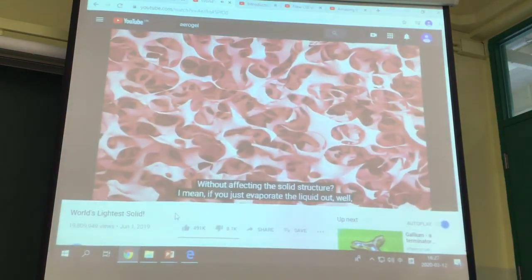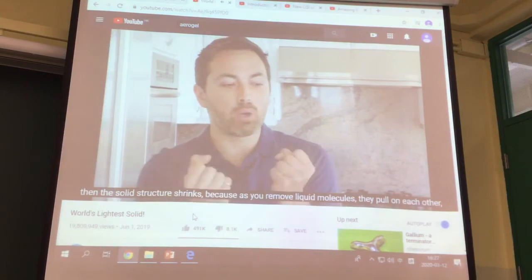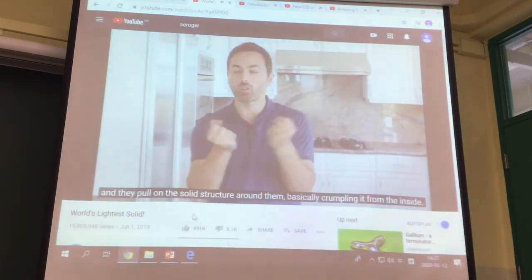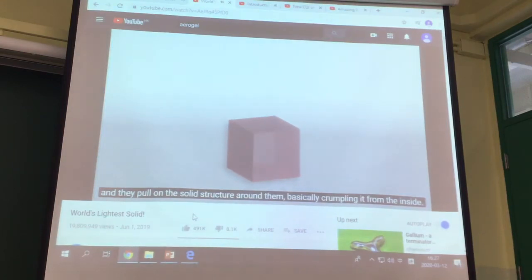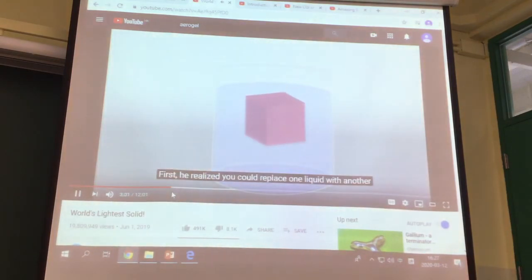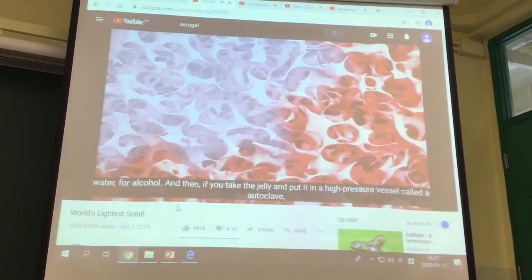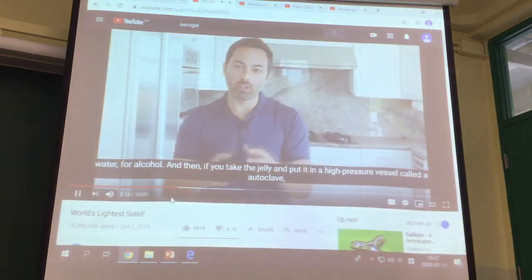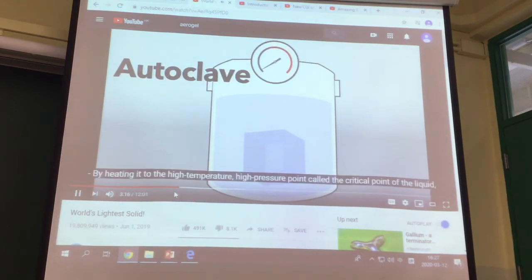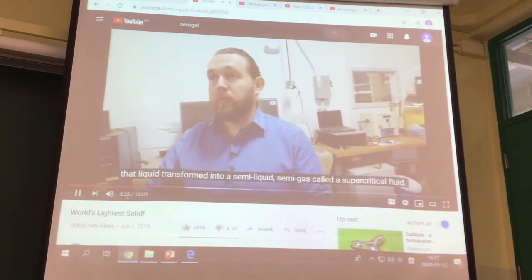If you just evaporate the liquid out, well, then the solid structure shrinks. Because as you remove liquid molecules, they pull on each other, they pull on the solid structure around them, basically crumpling it from the inside. Now Samuel Kistler solved this problem in two ways. First, he realized you can replace one liquid with another inside the jelly just by washing it thoroughly. So you can swap out, say, water for alcohol. Then you can take the jelly and put it in a high-pressure vessel called an autoclave by heating it to the high-temperature, high-pressure point called the critical point of the liquid.